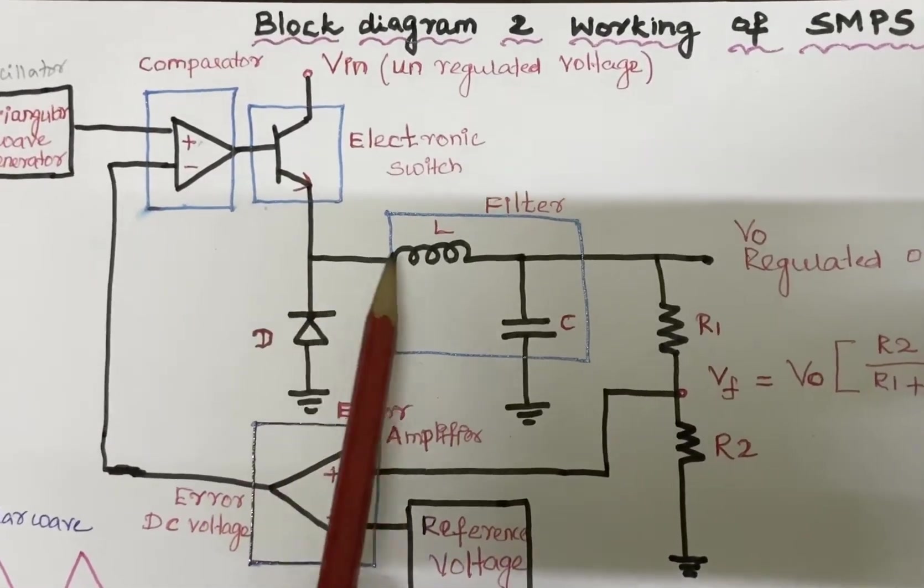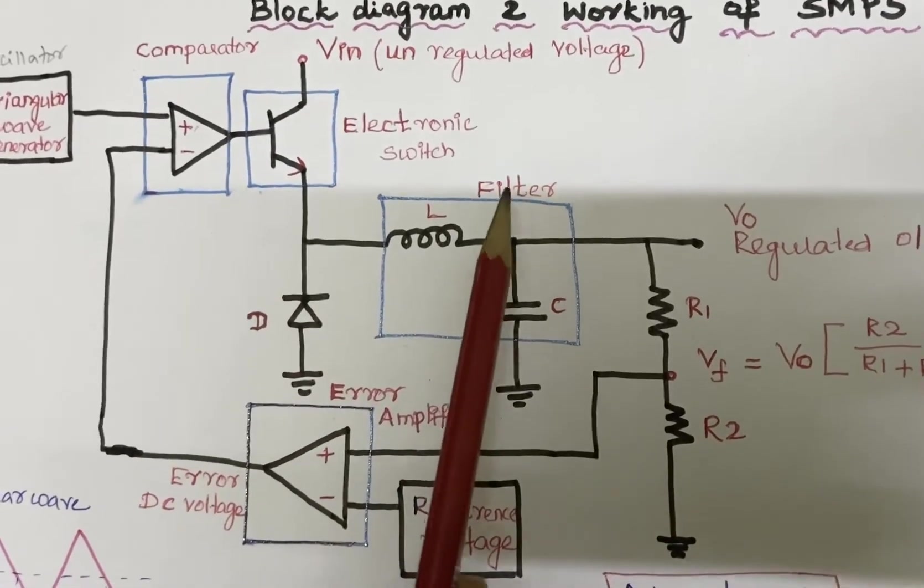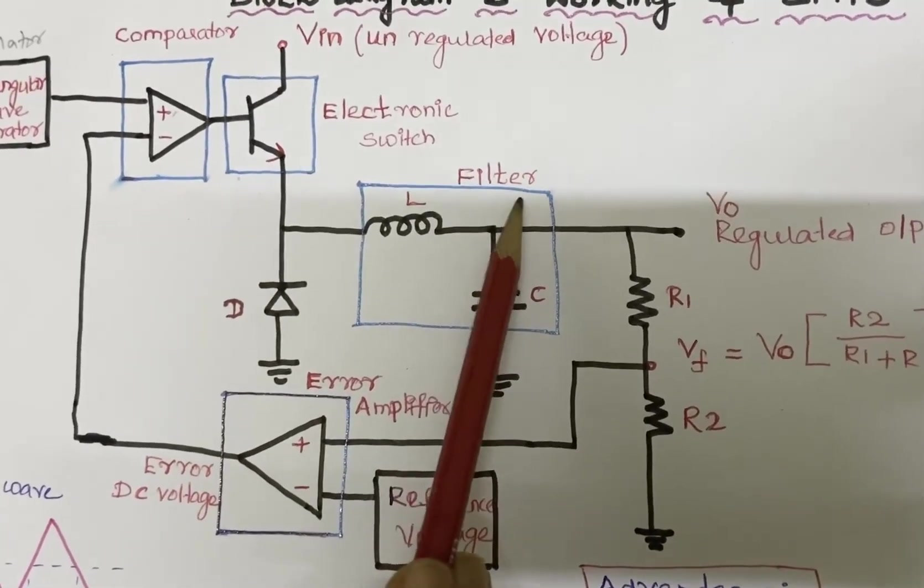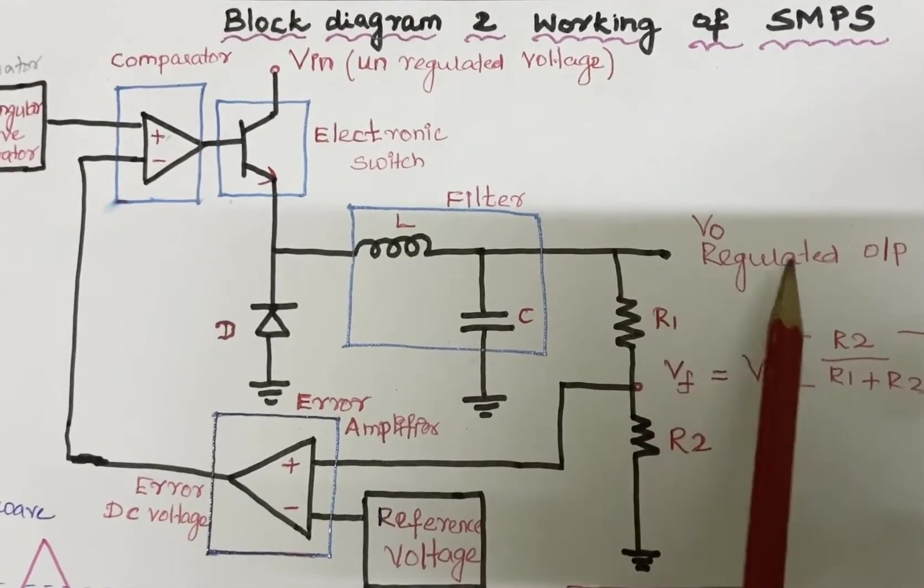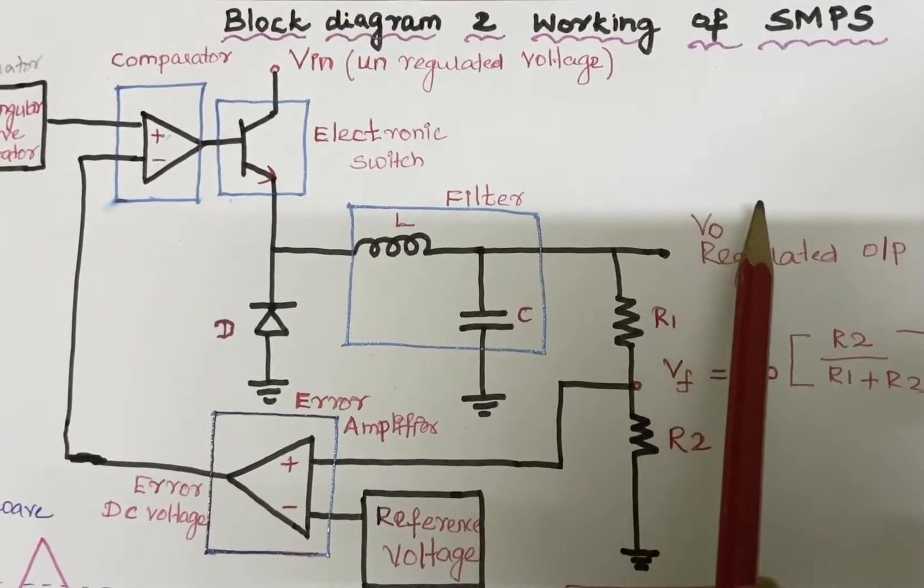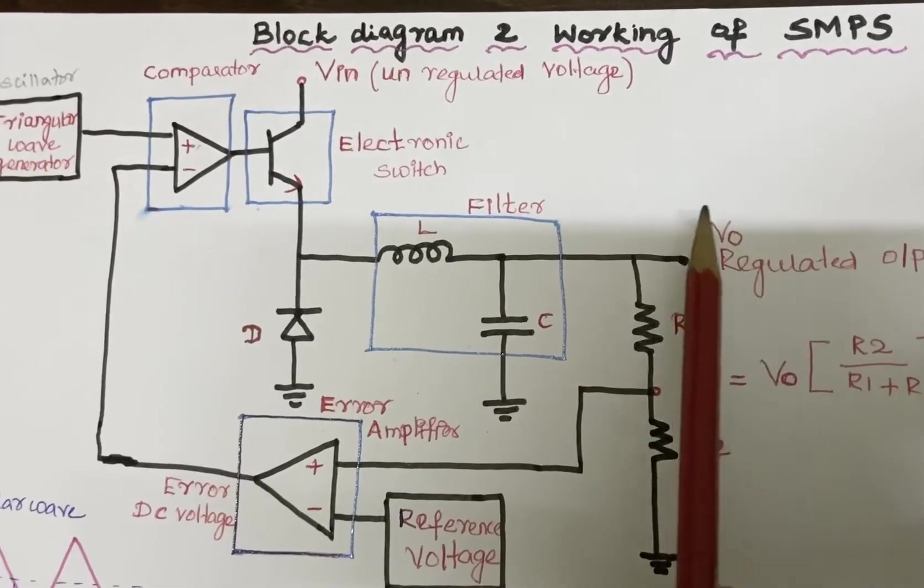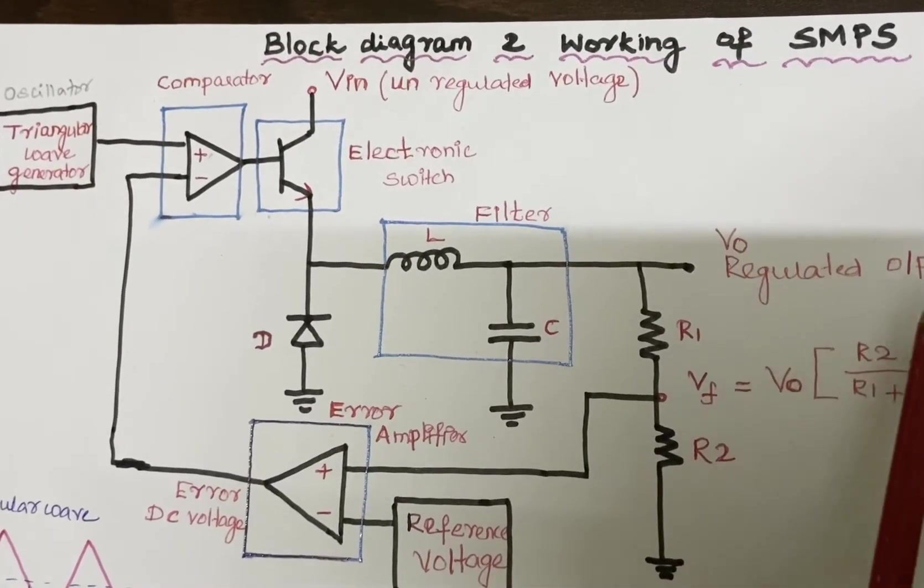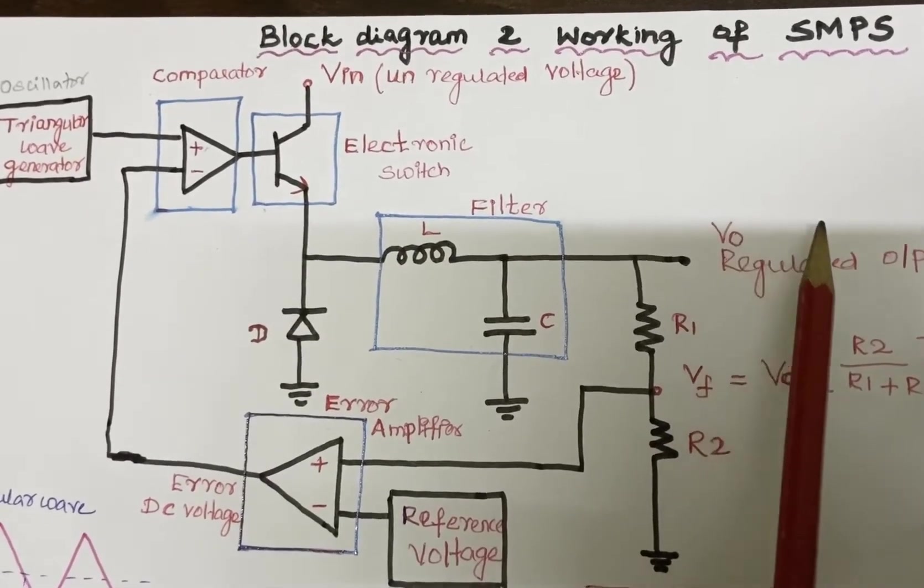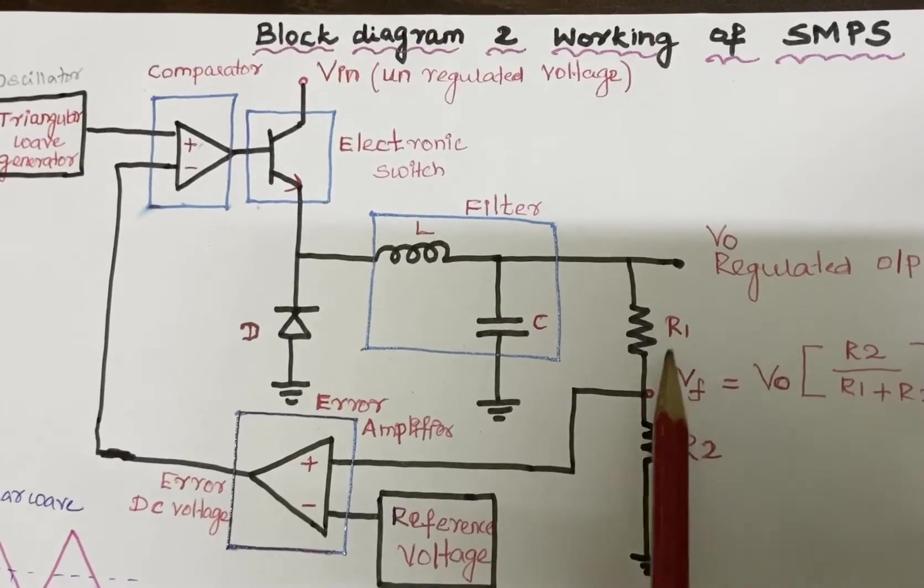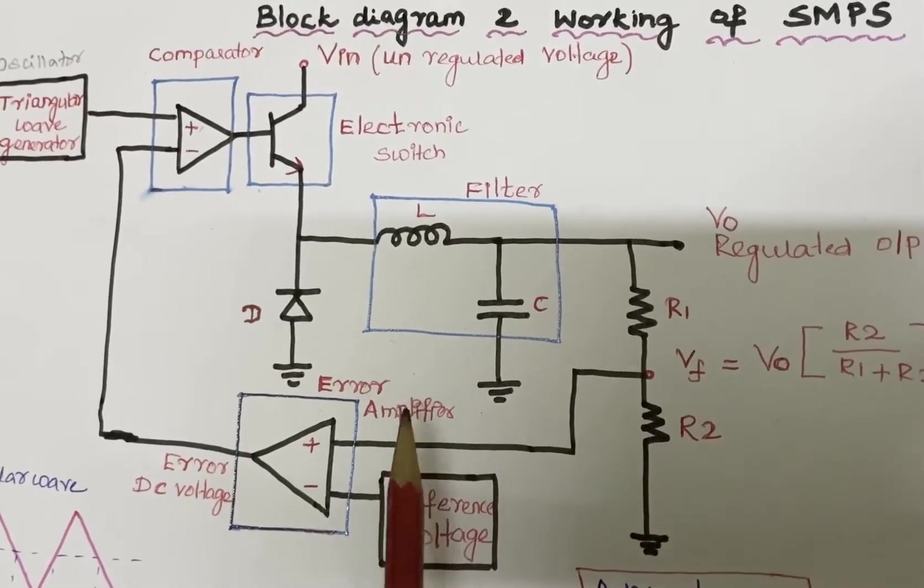The output is passed to the filter, which provides smooth output. The Vo may be either increased or decreased; based on that, the output has to be controlled. For example, if the voltage increases, Vo increases, it is fed back to the error amplifier.